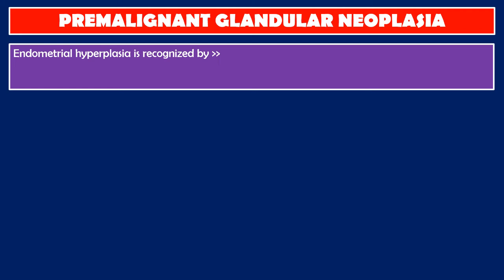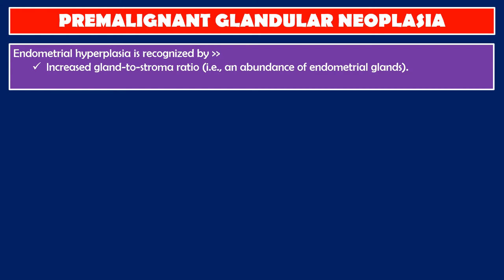Endometrial hyperplasia is recognized by increased gland-to-stroma ratio — that is, an abundance of endometrial glands — and glandular architectural irregularity and complexity.